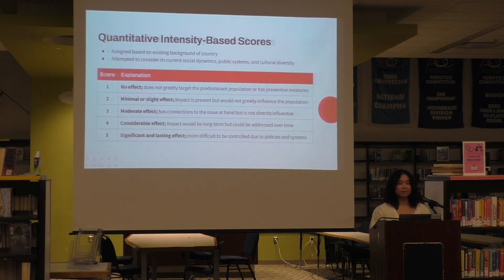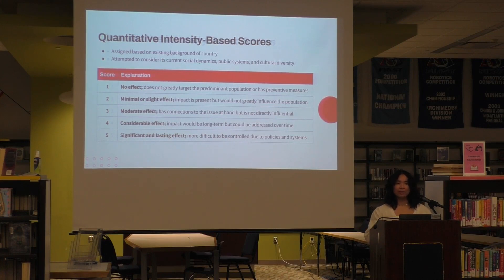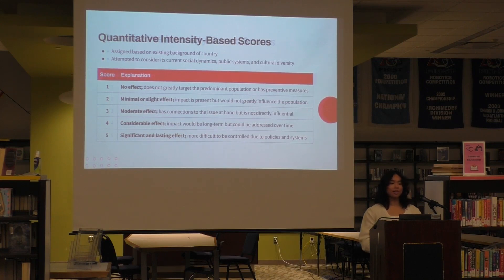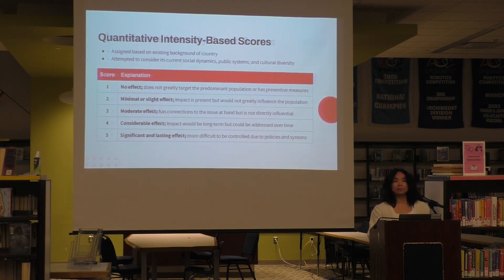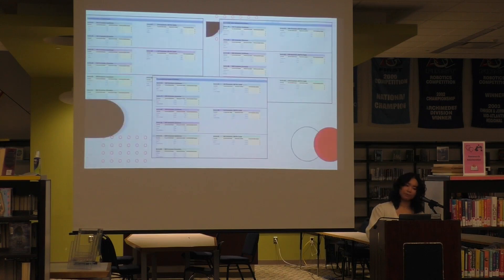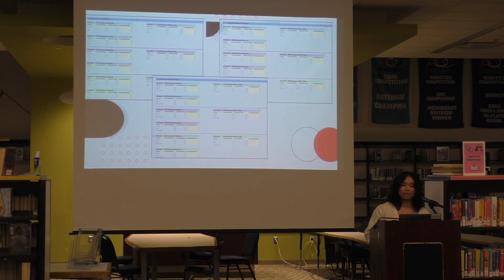These are the quantitative scores I attributed to different countries based on how they would be affected by a specific article's representation of those groups. These scores were assigned based on that country's existing background, considering its present social dynamics, public systems, and cultural diversity. I rated these on a scale from one to five: one being no effect, two being minimal or slight effect, three being moderate, four being considerable, and five being a significant and lasting effect. I included side notes to guide the different categories.